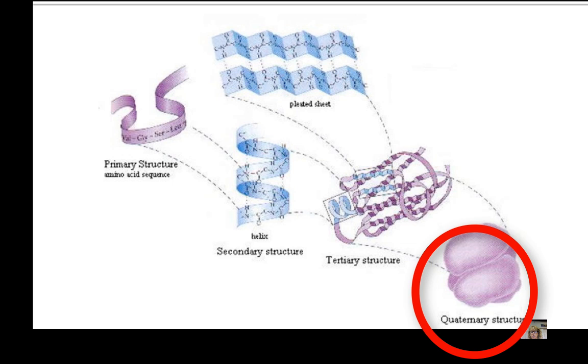Quaternary structure results from the bonding of two or more subunits. Those subunits may be the same or they may be different ones.